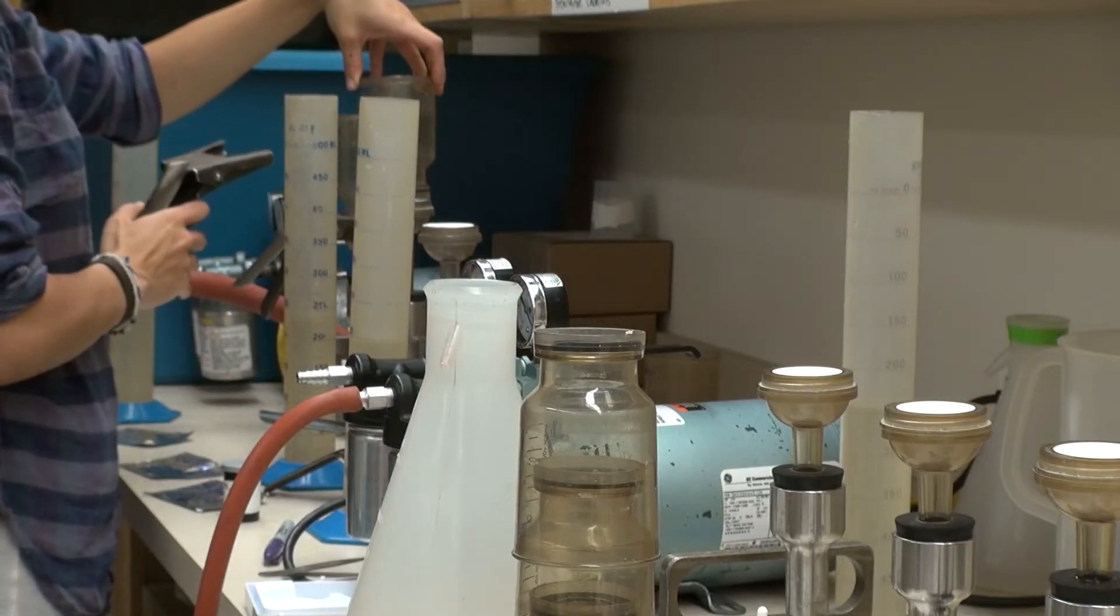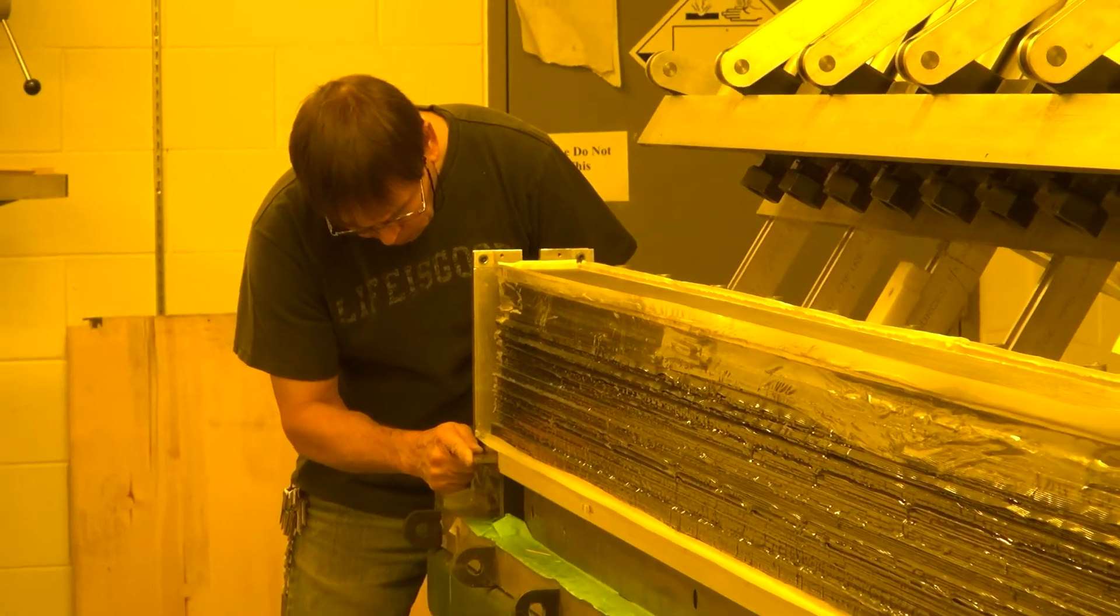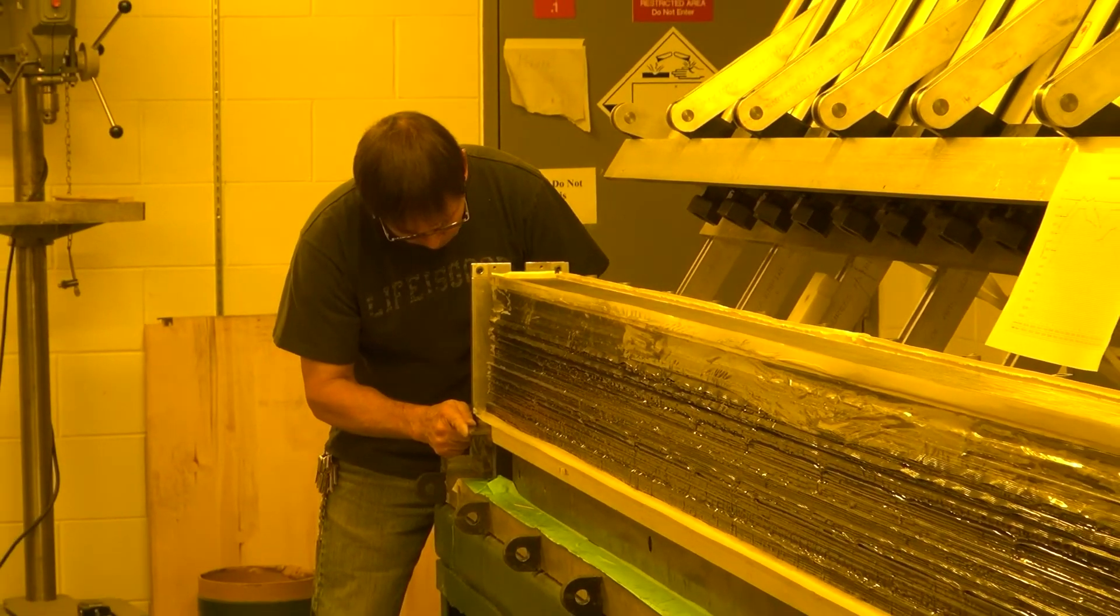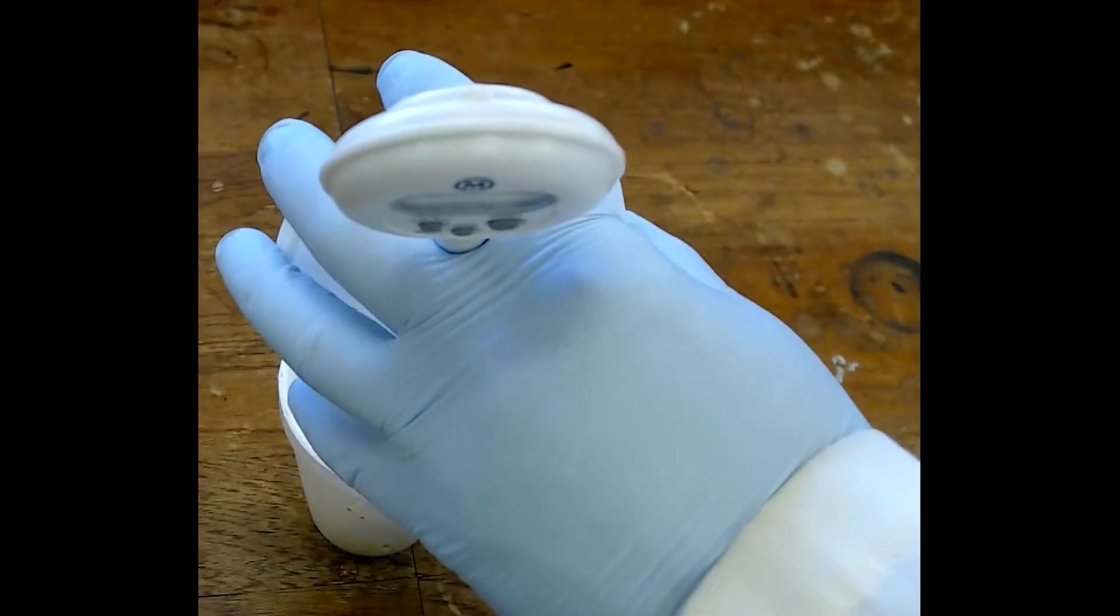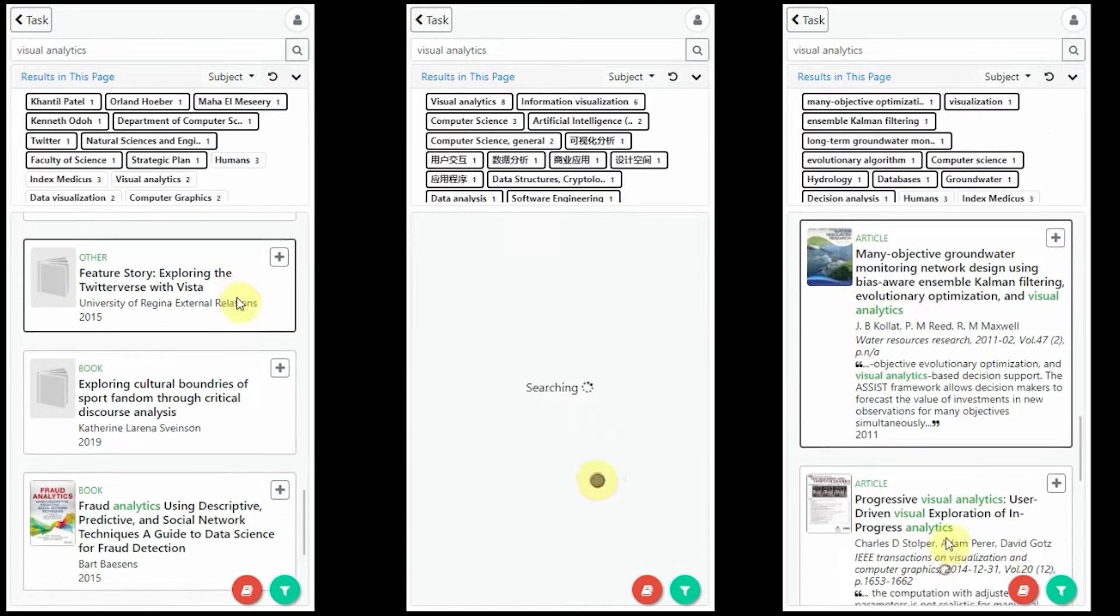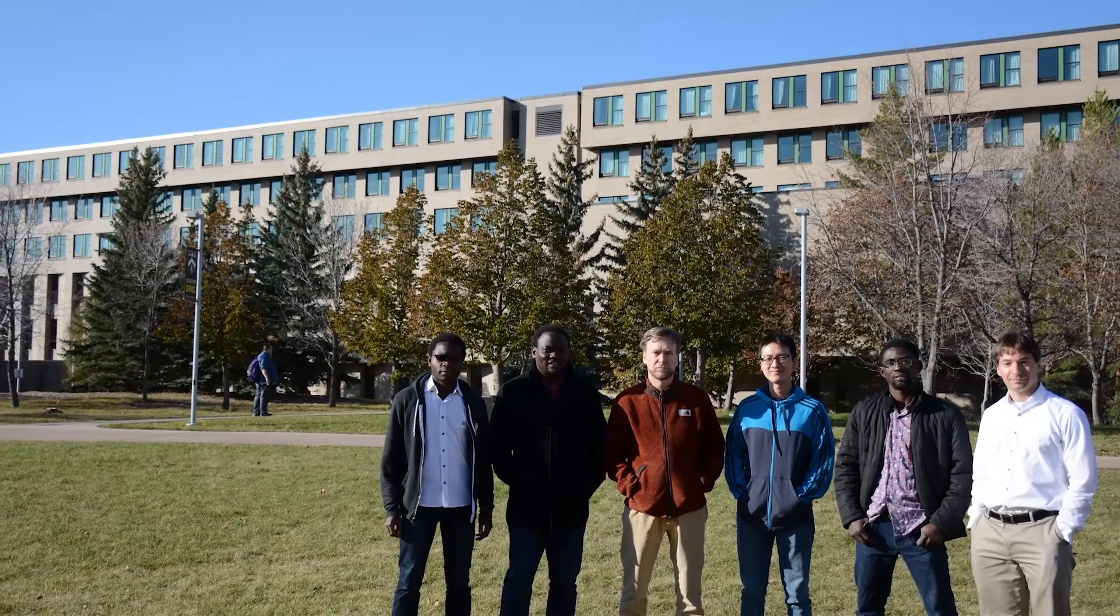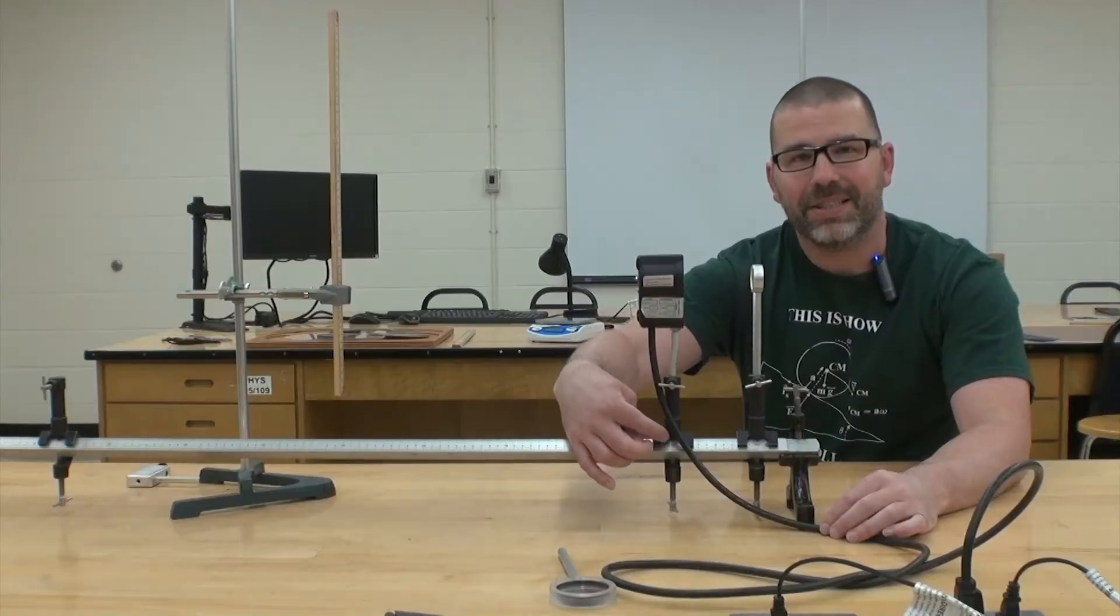The Faculty of Science is made up of six departments that offer a wide range of programs to begin your scientific journey. They include biology, chemistry and biochemistry, computer science, geology, mathematics and statistics, and physics.